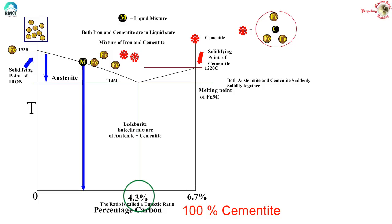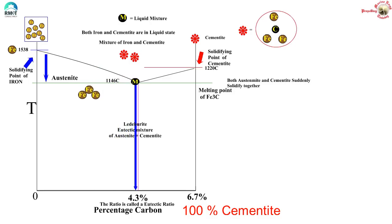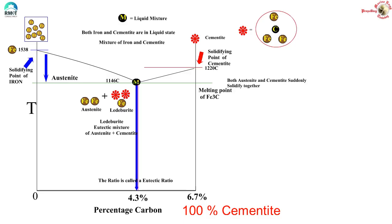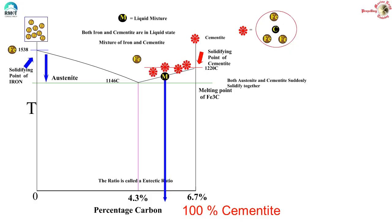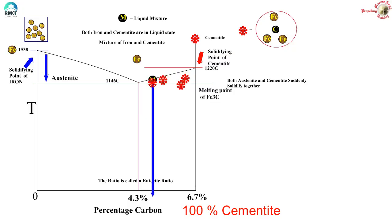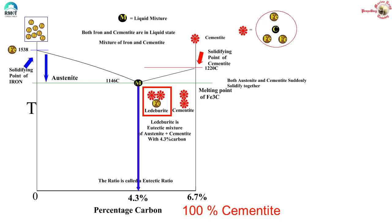If the percentage of carbon in the mixture before cooling is less than 4.3%, as cooling happens iron solidifies to austenite and comes out of solution. This makes the percentage of carbon in the remaining liquid increase, so the mixture moves along the curve until the carbon percentage reaches 4.3% — at which point the entire liquid mixture solidifies as leduberite. The resultant mixture is austenite plus leduberite. Similarly, starting from above 4.3% carbon, cementite separates out first, so the carbon percentage in solution progressively decreases until the ratio reaches 4.3%, and then the entire mixture suddenly solidifies as leduberite. The resultant mixture is cementite plus leduberite.